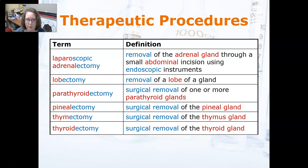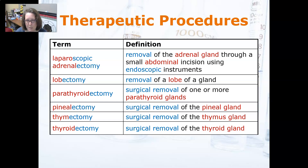Laparoscopic adrenalectomy is the removal of the adrenal gland through a small abdominal incision using an endoscopic instrument. Lobectomy is the removal of a lobe of a gland. A parathyroidectomy is the surgical removal of one or more parathyroid glands — remember, you have four of them.